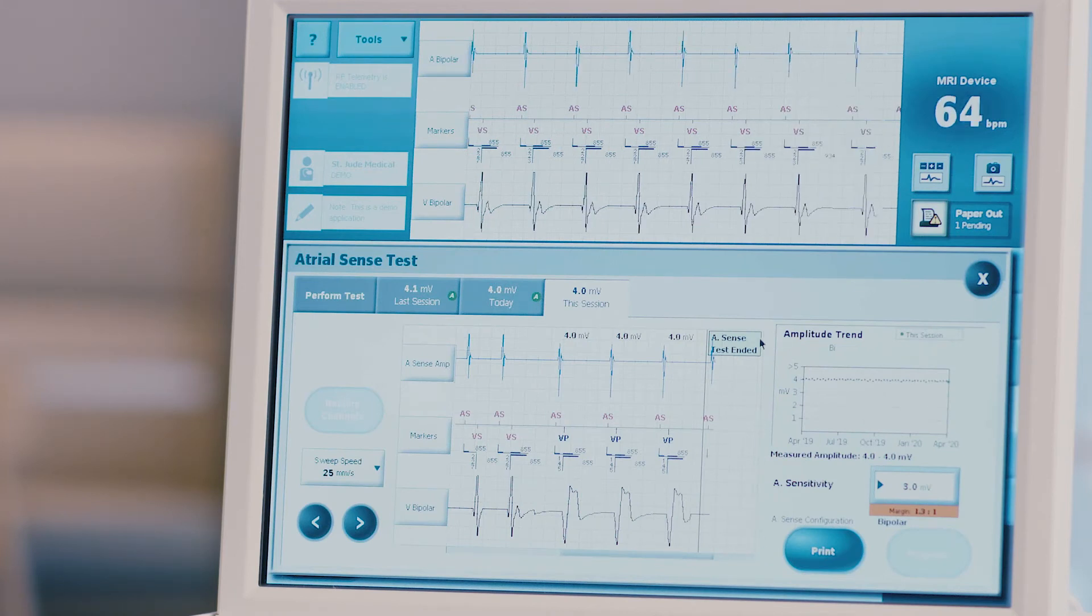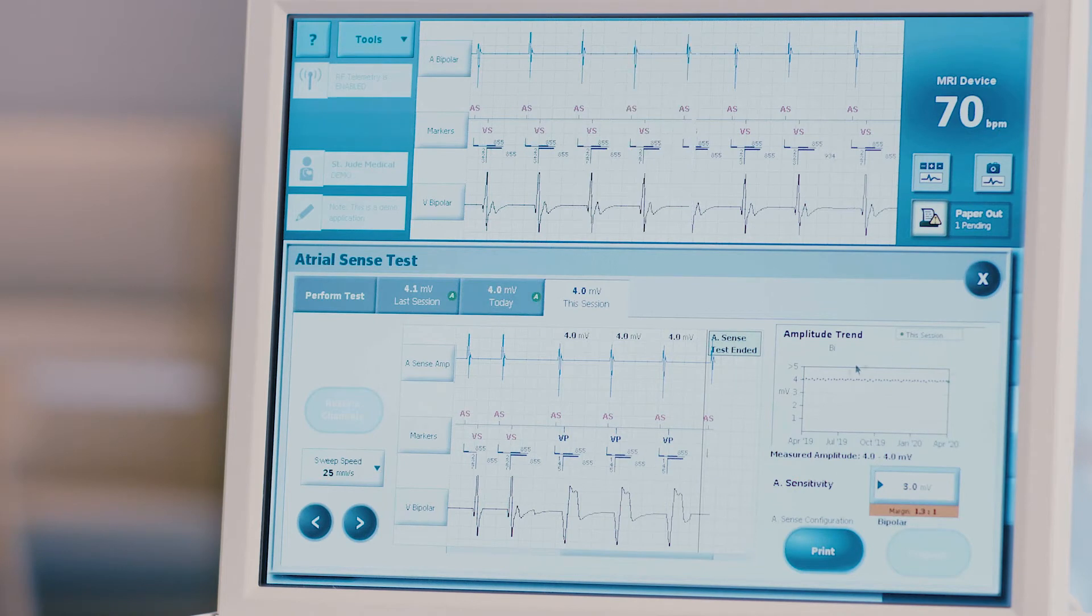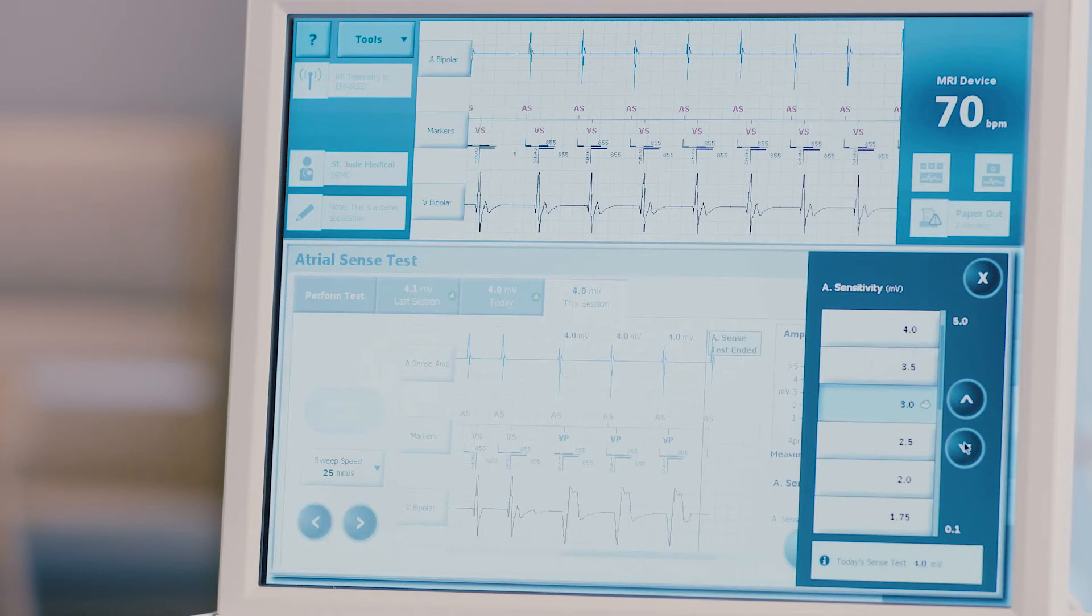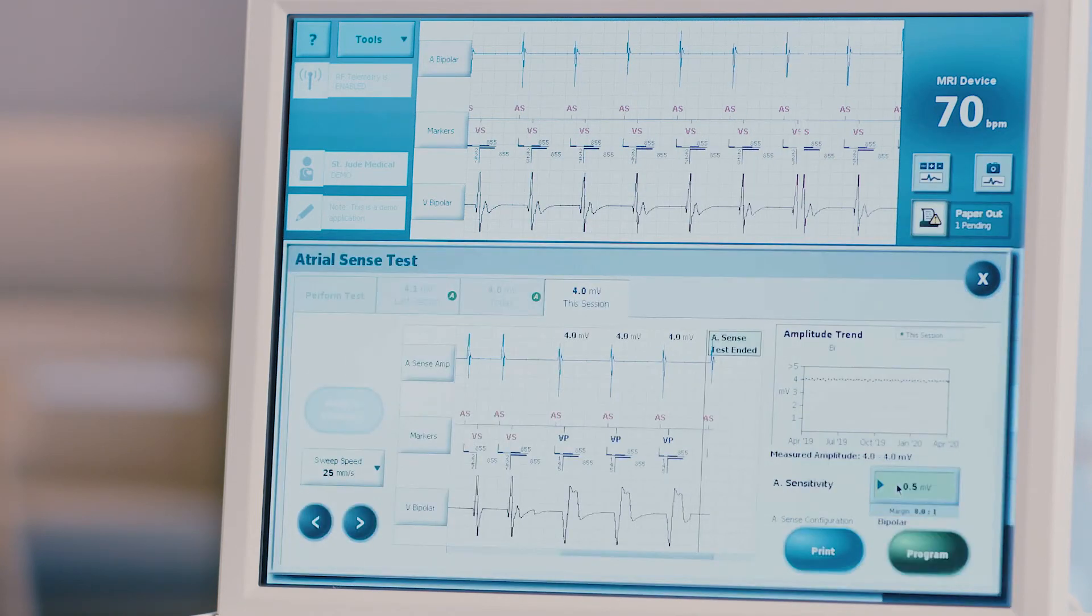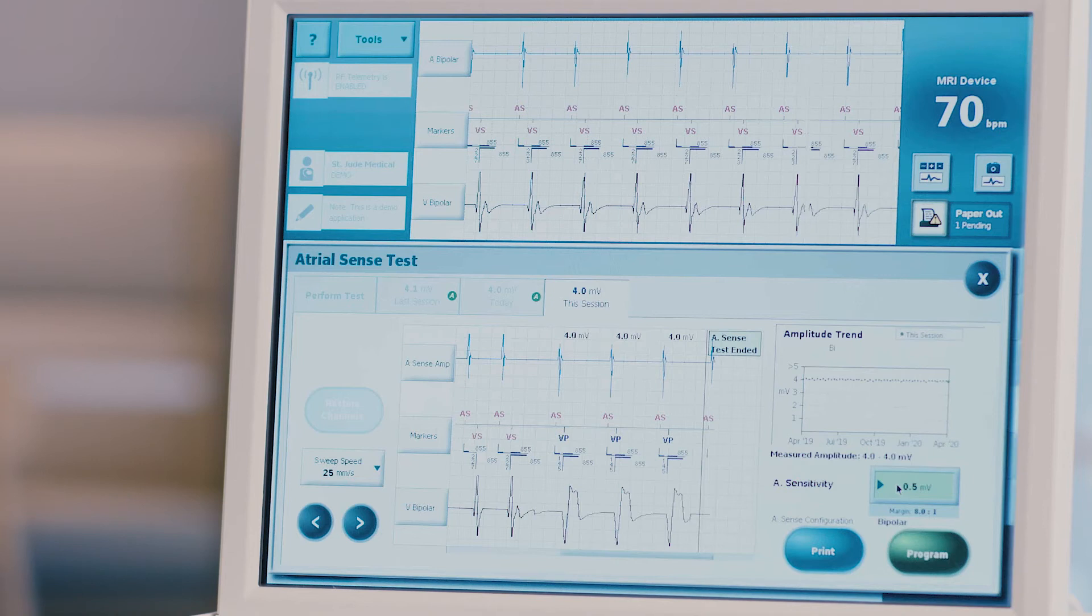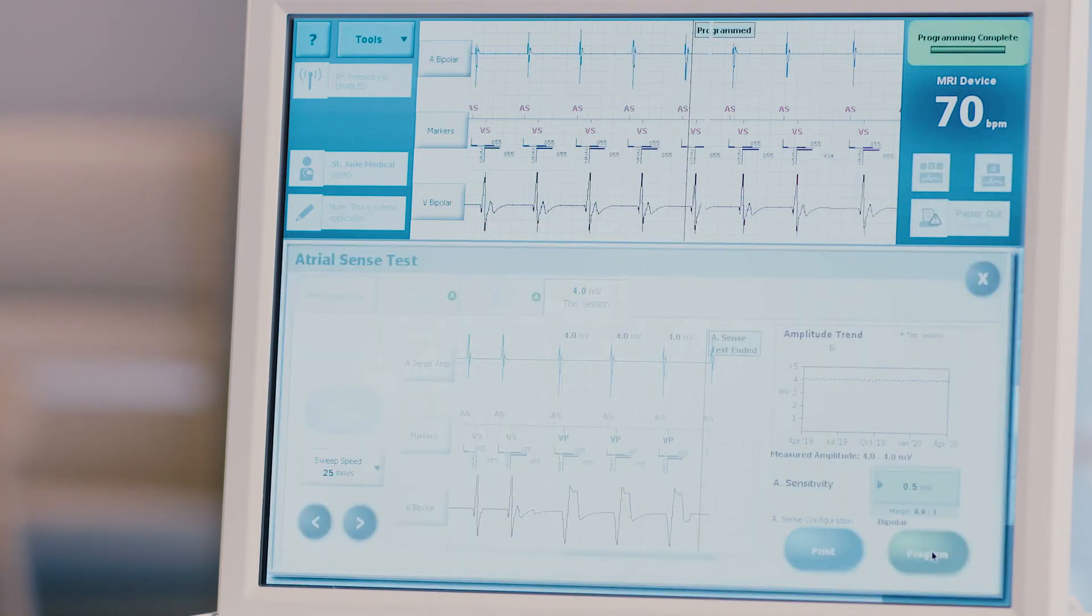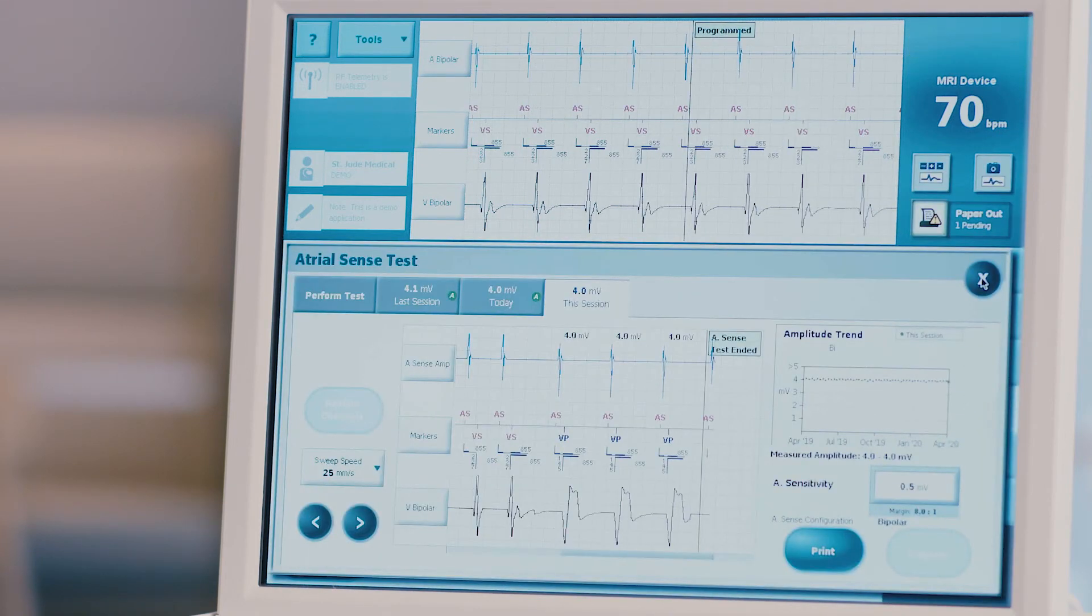After the test is completed, a freeze capture of the EGM screen is displayed. Note any trend data provided on the right side of the screen. Permanent programming changes can be made to each setting directly from this test results screen, only in the presence of a healthcare professional or certified Abbott employee, by choosing the desired setting and clicking the green program button. Press X to close the screen and return to the test page.